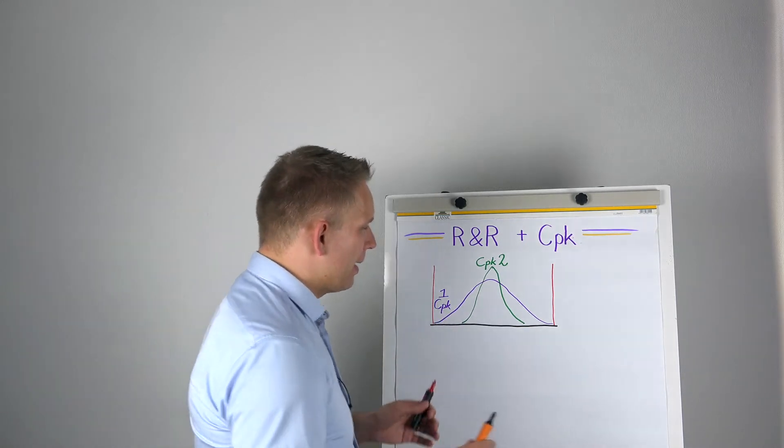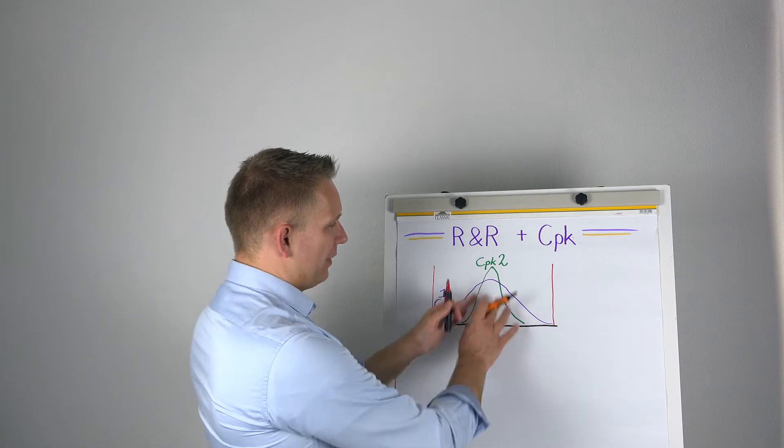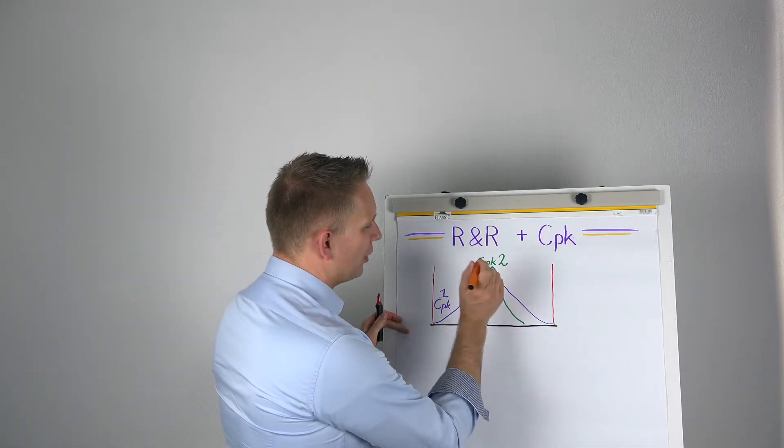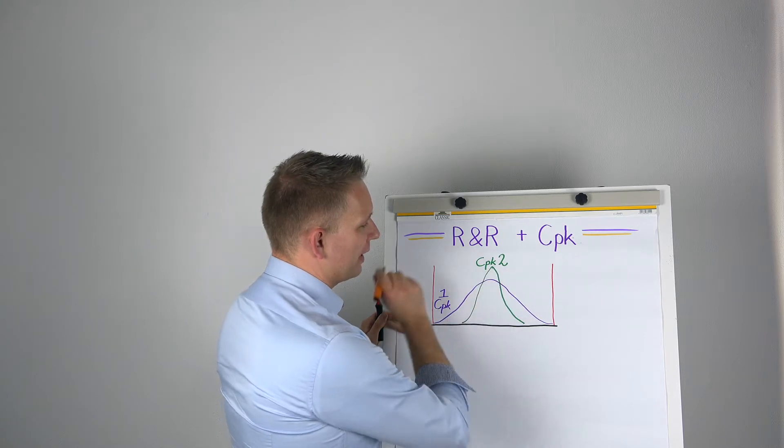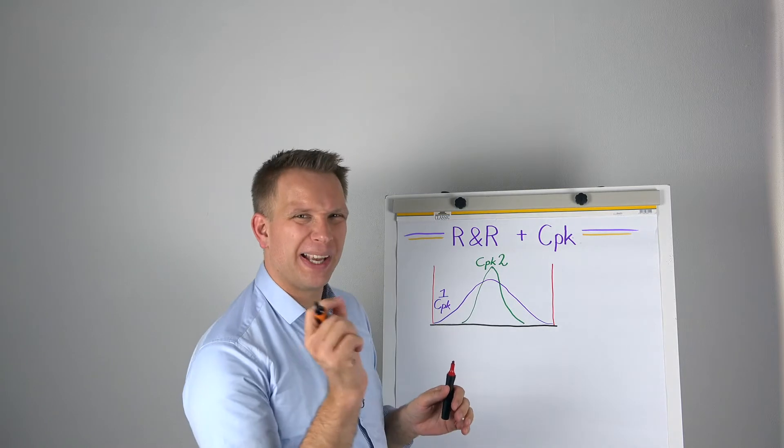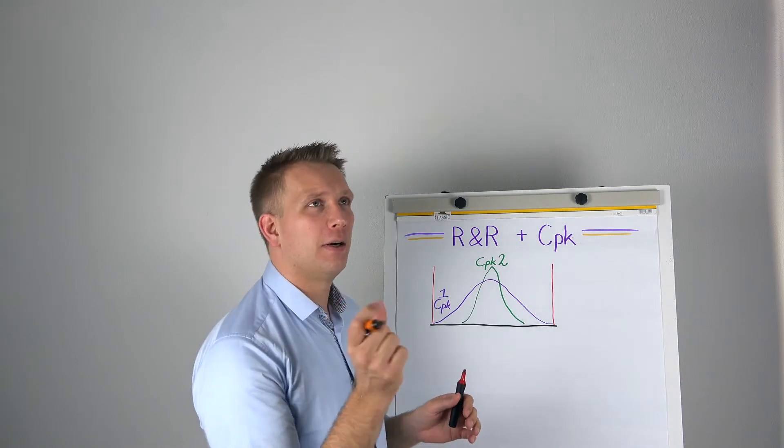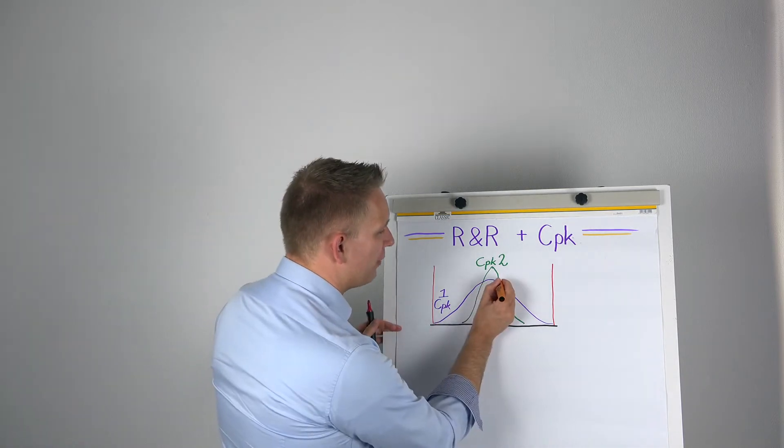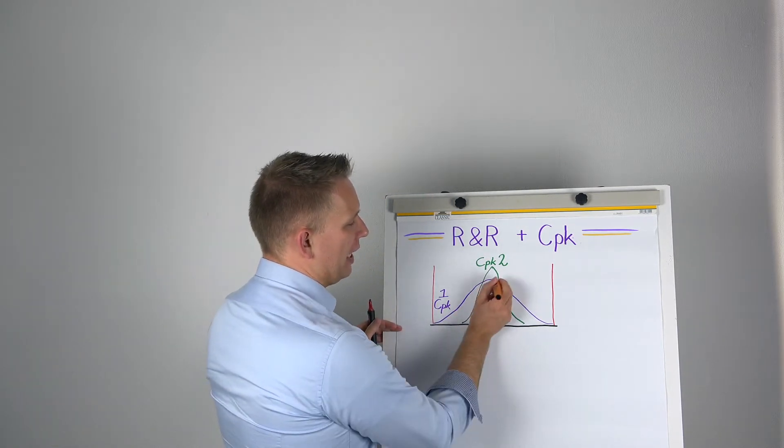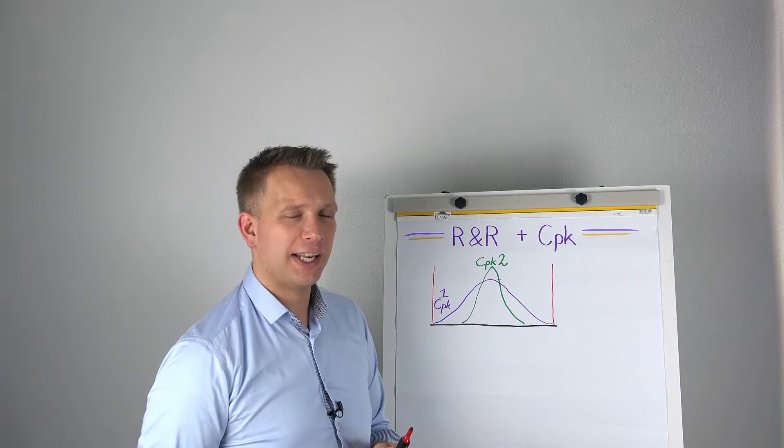And what that means is that when we have this process, and I'll start with the CPK2 process, actually this part came out of our line. But our measurement also has a little bit of variation. So it might register as this one, it might register as here, on average it will register that in the center.